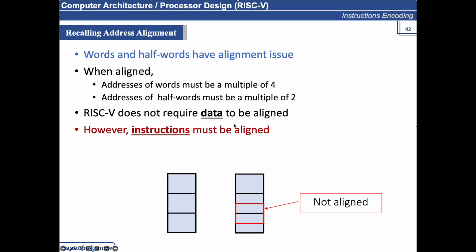If we start reading a 32-bit instruction from an unaligned point — say in the middle of a previous instruction — we get 32 bits, but the opcode starting point is wrong. The first seven bits may not represent a valid opcode, or may represent a different operation, so the instruction would not execute correctly.